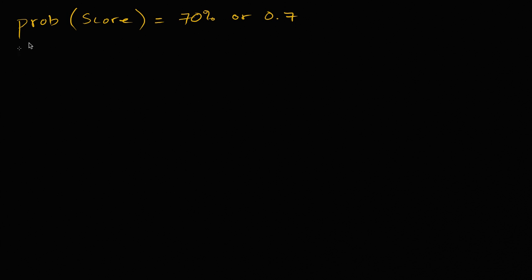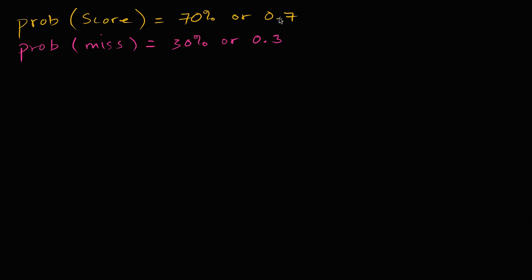And then the probability of missing a free throw is just going to come straight from what we wrote down. You're either going to score or miss, so the probability of missing is 100% minus 70%, which is 30%, or 0.3. One minus 0.7. These are the only two possibilities, so they have to add up to 100%, or they have to add up to one.